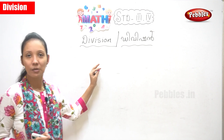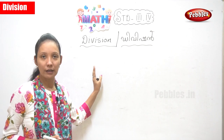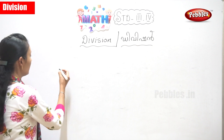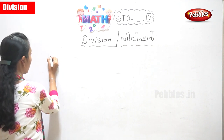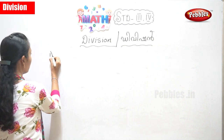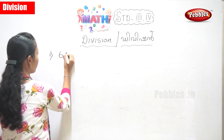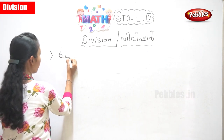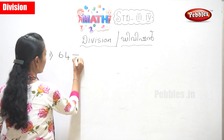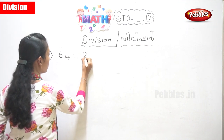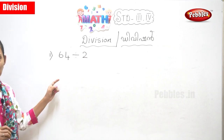You can learn with smaller numbers. Now suppose I write your first sum. Suppose I write 64 divided by 2. Let's do with the symbol sum first. Can you start with the symbol sum?